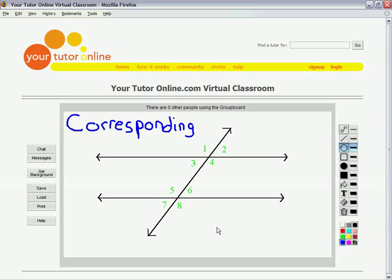The first angle pair is corresponding angles. It's easier if we look at each set of angles separately. Angles 1 through 4 is one set, and angles 5 through 8 is another. Corresponding angles are in the same position in each group. Think of it in terms of which corner the angle is in.